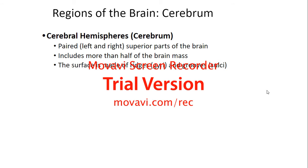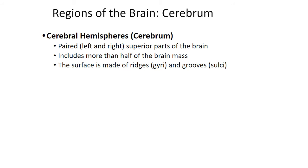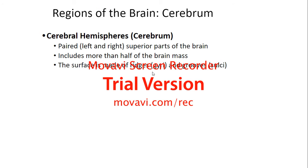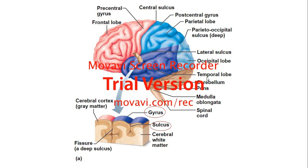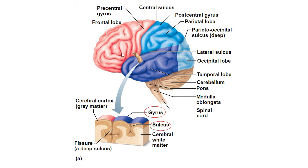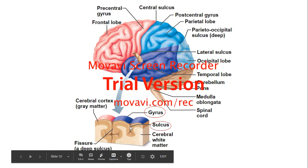Your cerebral hemispheres can be divided into a right and left part of the brain. You have what's called ridges and grooves. The ridges are called gyri and the grooves are called sulci. You'll see in the next image how you have all these ridges and grooves. A fissure is just a deeper groove — that's all a fissure is, a deep sulcus.